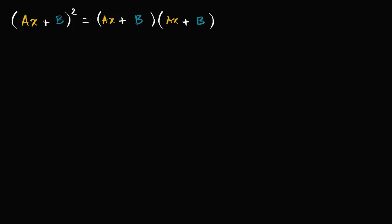What's that going to be equal to? Well, if you take this Ax and multiply it times that Ax, you're going to get Ax squared, the entire thing squared.